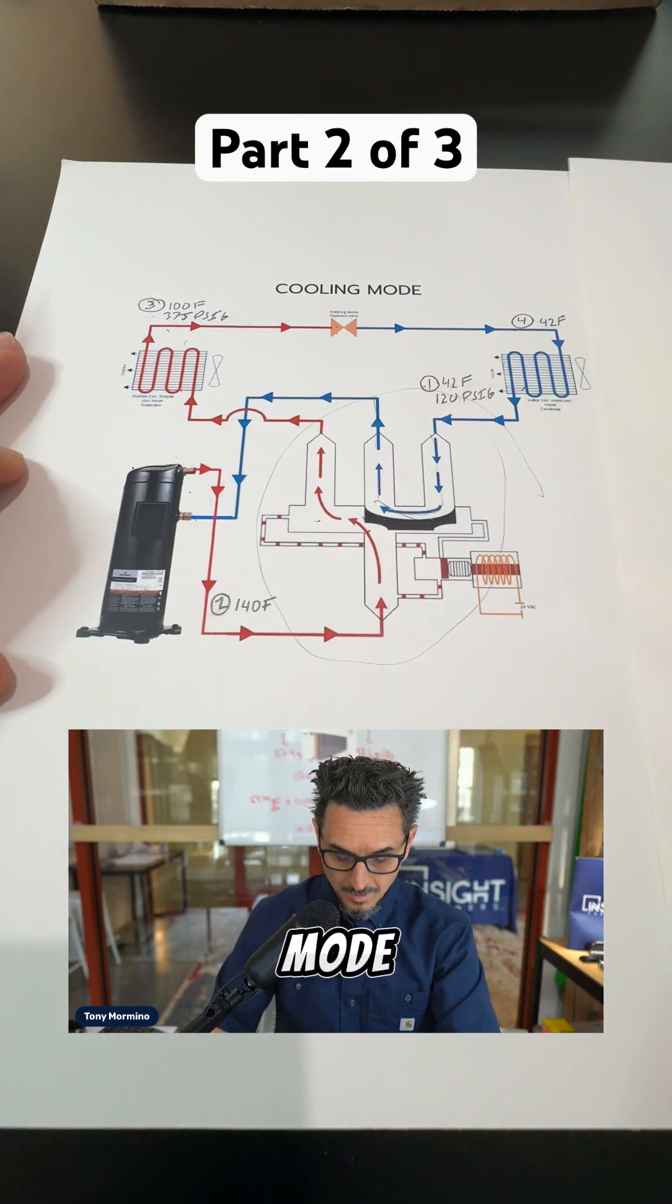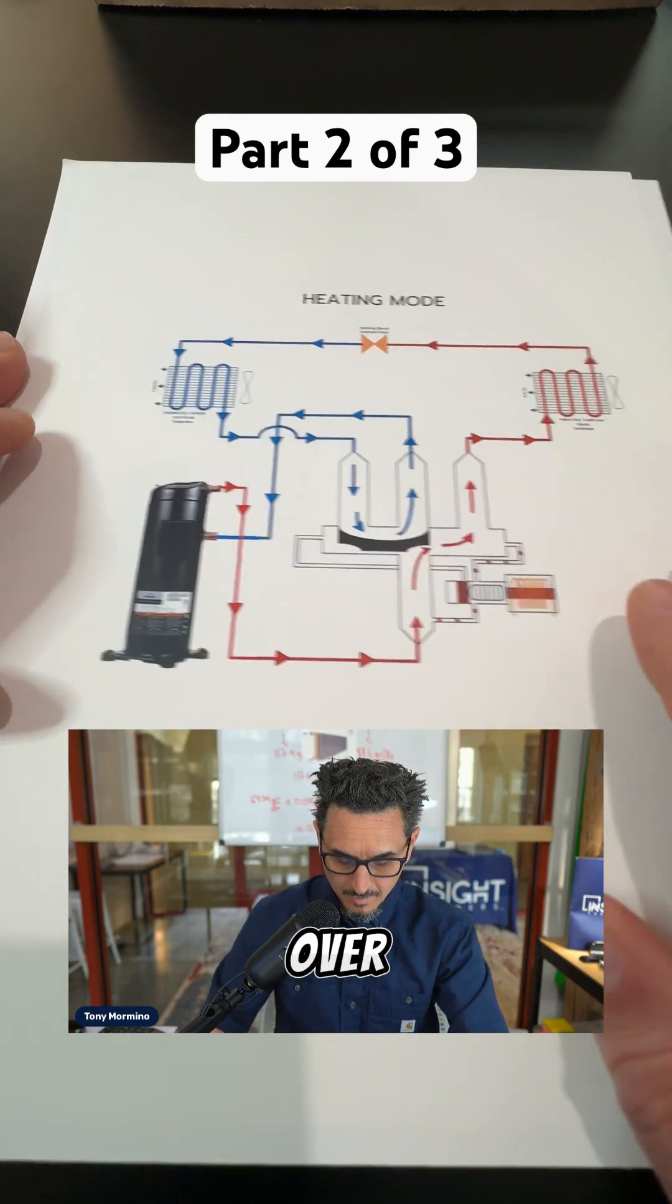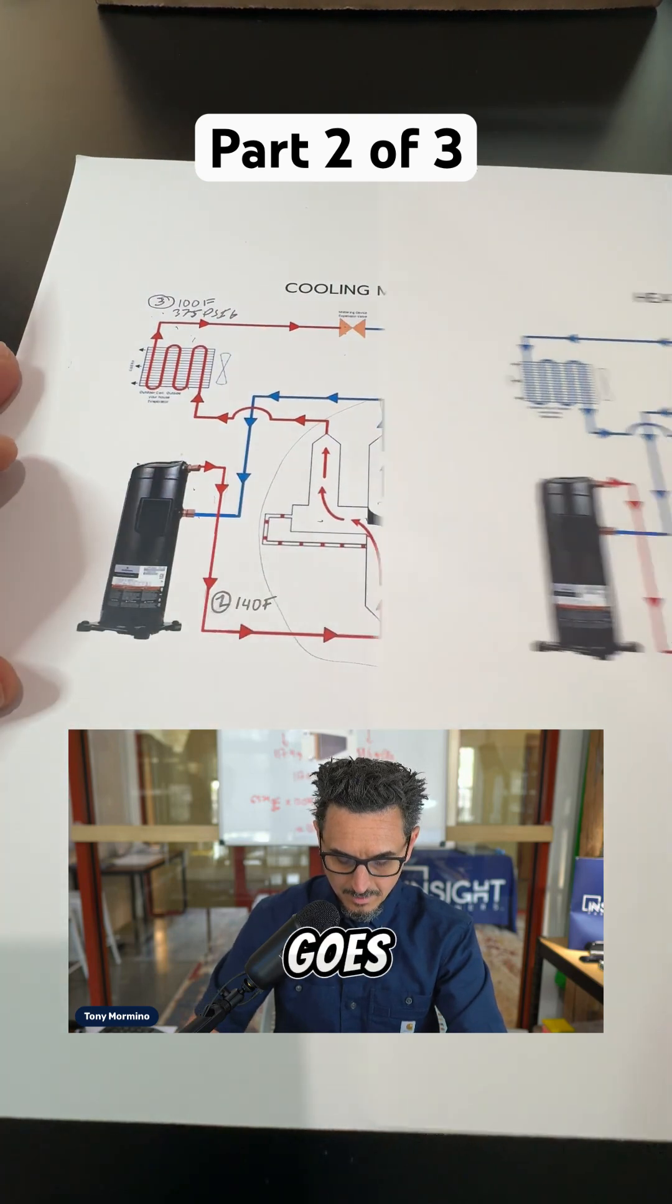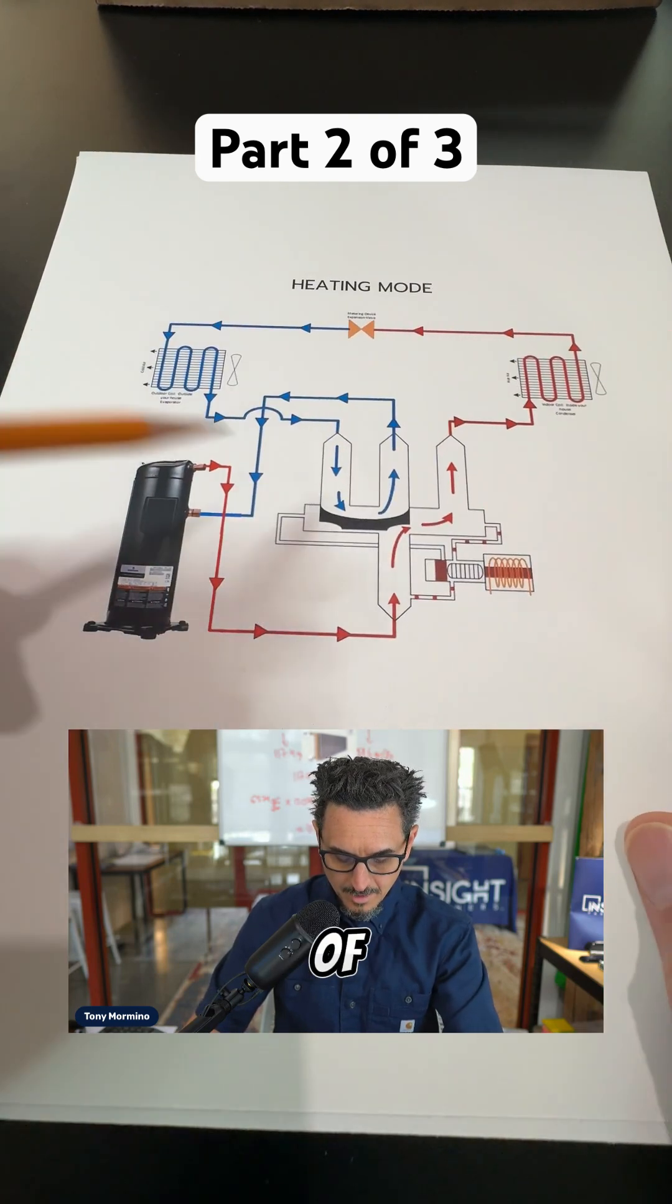So what happens in the heat pump mode is this valve here slides over to the right. Kind of like that. So it goes from this side of the reversing valve.